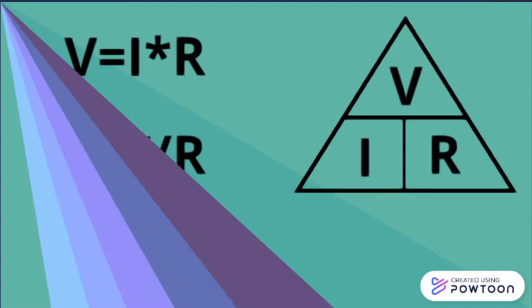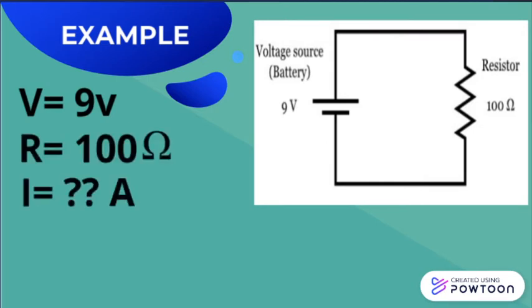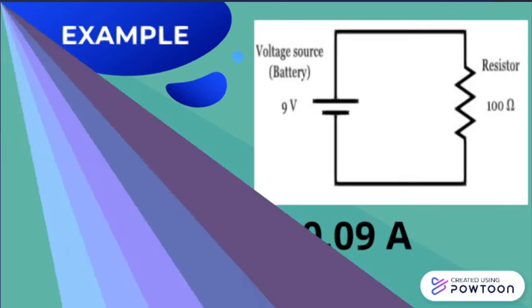Or we can also calculate the resistance, and that will be voltage divided by the current. For example, if we have a circuit that has a nine volt battery and a 100 ohm resistor, we can calculate the current that passed through this resistor by Ohm's law. The current equals voltage divided by the resistance, and that will give me 0.09 ampere.